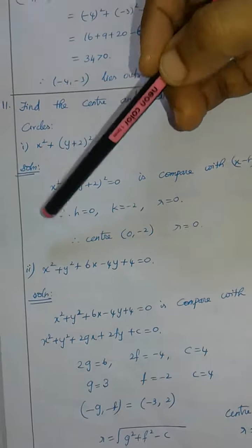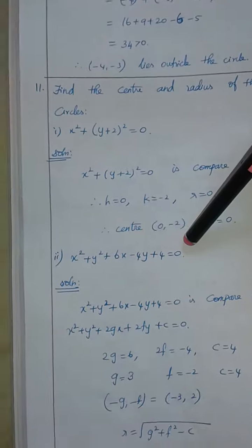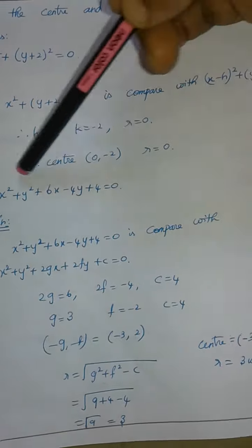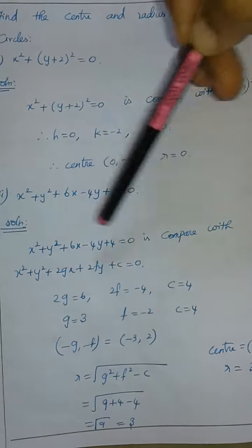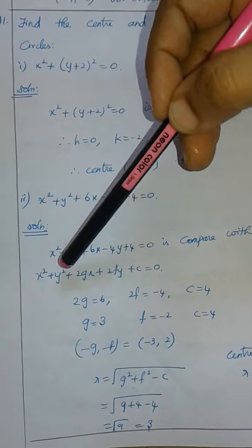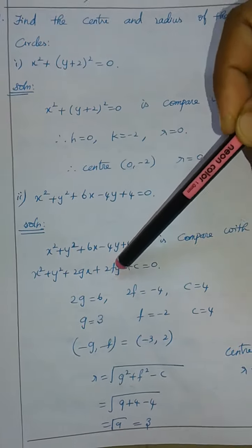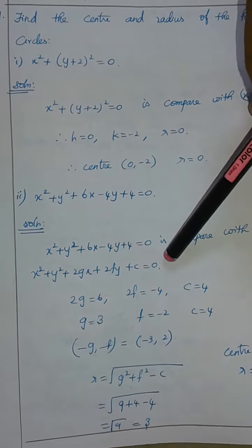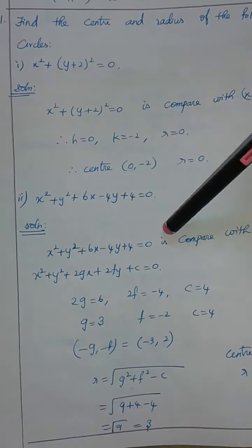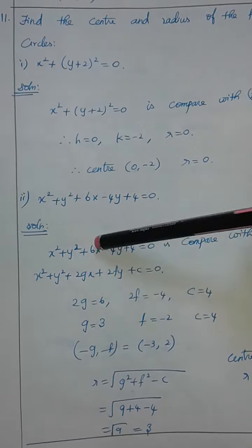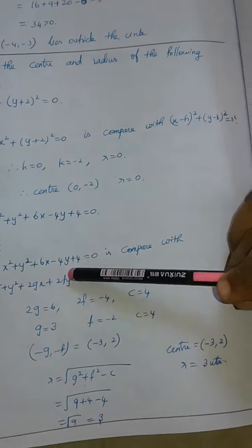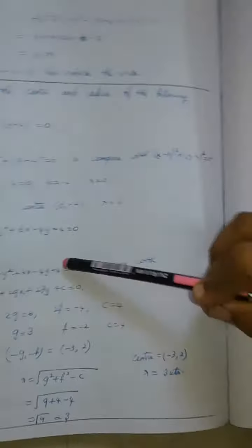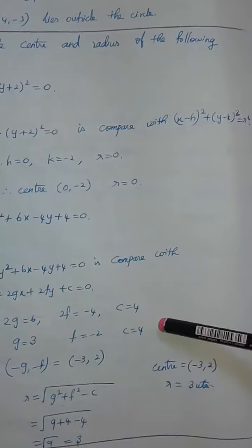This is a circle equation in general form: x square plus y square plus 2gx plus 2fy plus c is equal to 0. Comparing, 2g is 6, then g is 3. 2f is minus 4, then f is minus 2. c is equal to 4.